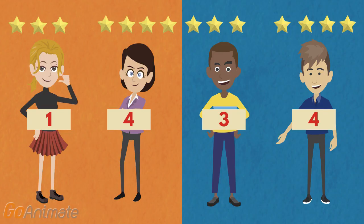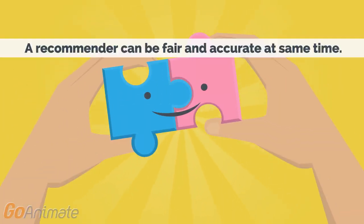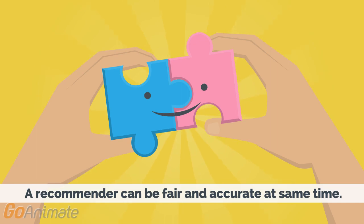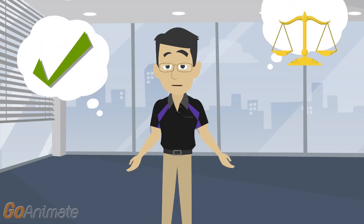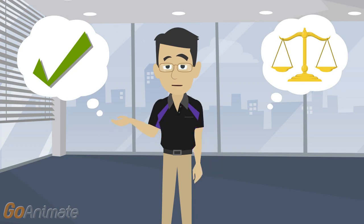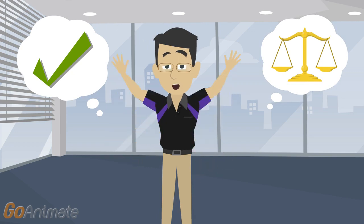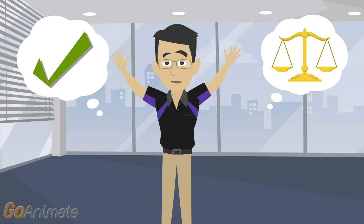In the same example, if an algorithm predicts these star ratings for our four students, then the average rating for men and women is both 3.5. But there is a lot more error in the predictions for the women than for the men, so this prediction is not fair by our definition. The cool thing about this unfairness definition is that it doesn't conflict with accuracy — a recommender can be fair and accurate at the same time. Imagine a recommender that perfectly predicts user preferences with no error; then it is also perfectly fair because the average prediction error is zero among all groups.